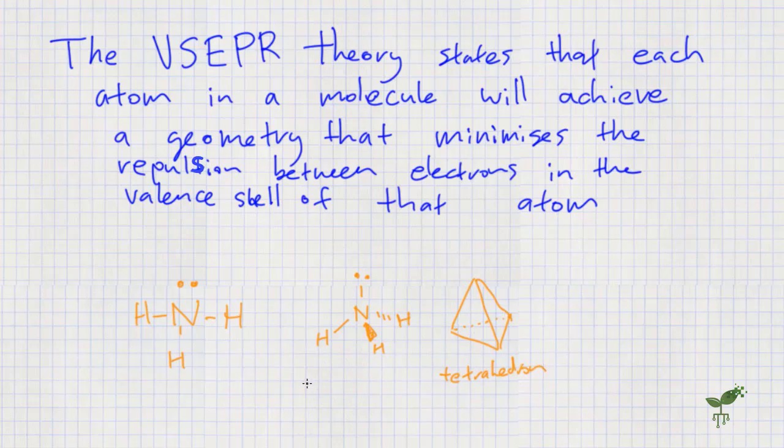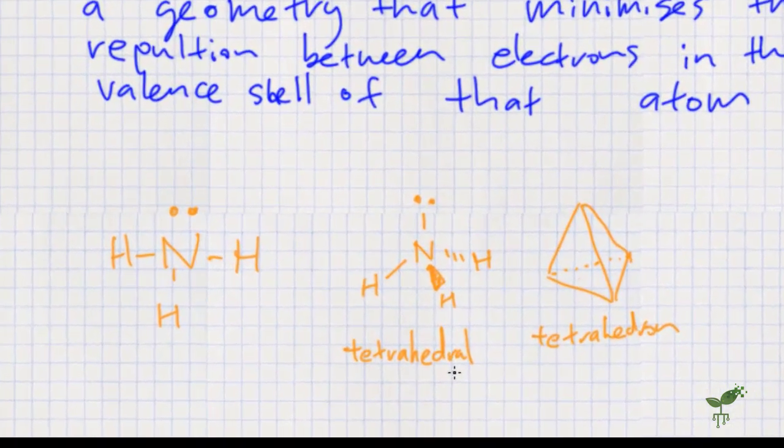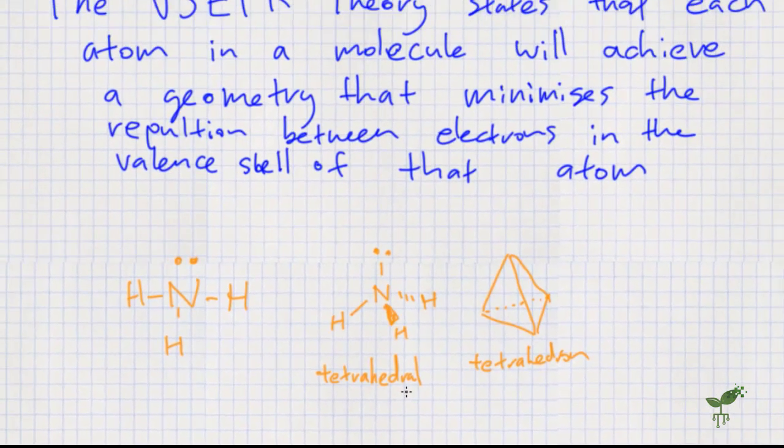This is a tetrahedral shape, because it looks like a tetrahedron. So this solid triangle indicates that the hydrogen's poking out of the page, so it's coming towards us, while the dashed line indicates that it's going into the page, so away from us.